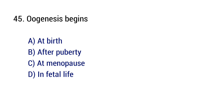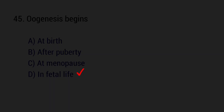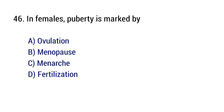Question number 45 and 46. Oogenesis begins in females at birth. Female puberty is marked by? The right answer is option C: Menarche.